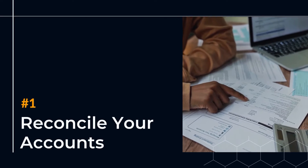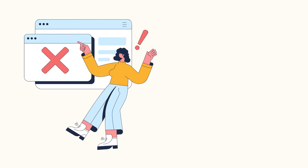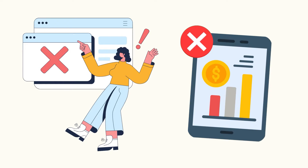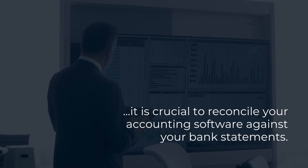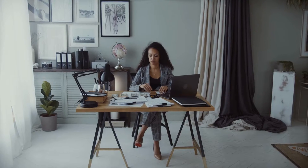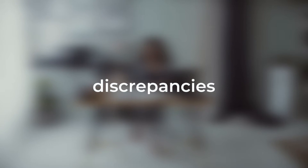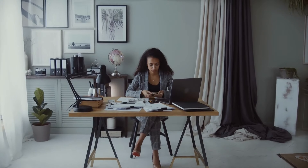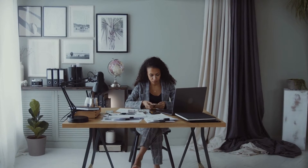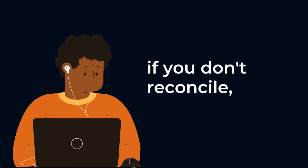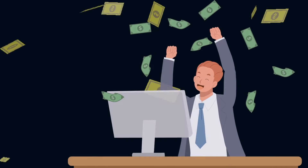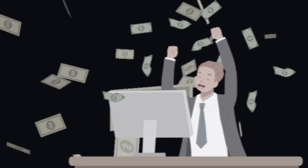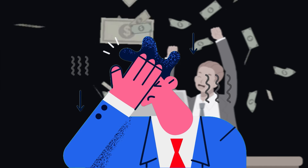Number 1: Reconcile your accounts. To avoid errors in misleading opening cash balance, it is crucial to reconcile your accounting software against your bank statements. This process allows you to detect any mistakes, discrepancies, or fraud in your financial records that could severely impact the financial health of your business. For instance, if you don't reconcile, it could lead to misleading cash positions where you think you have more money than you do, but in reality it's just an error on your account.